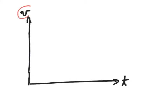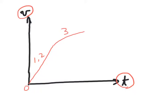The velocity-time graph for the different stages can be shown: stages 1 and 2 show constant acceleration, stage 3 shows decreasing acceleration, stage 4 marks the point of maximum velocity, and stage 5 shows deceleration.